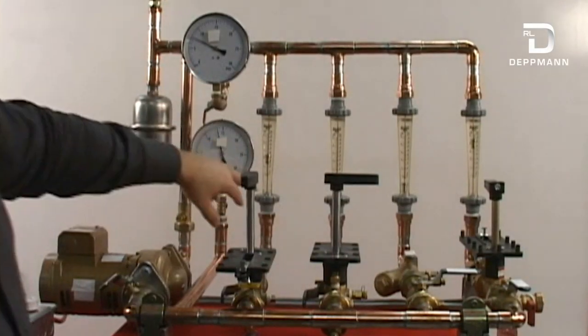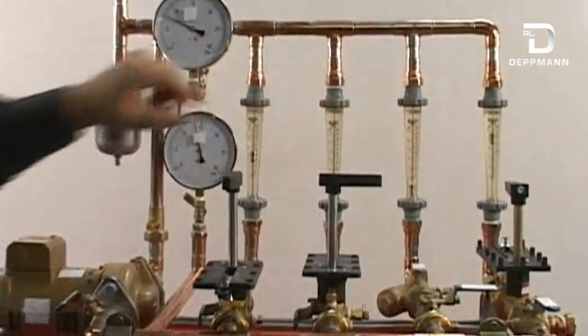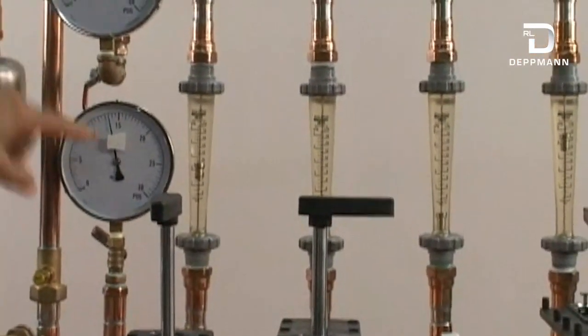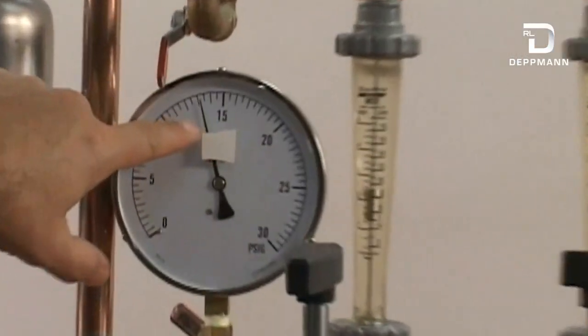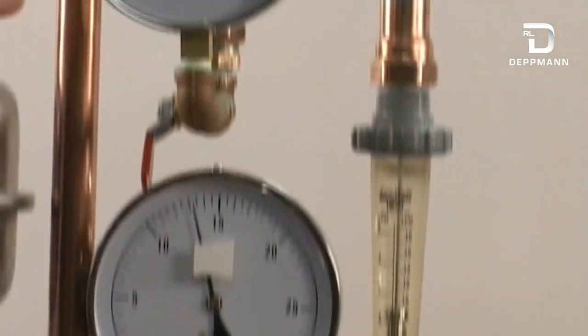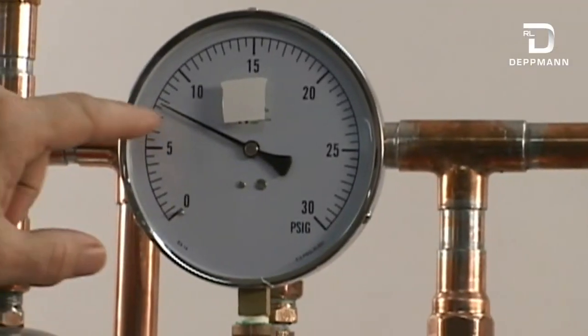Our system's up and running. We've got flow through this zone and this zone, and you see our differential pressure. Roughly we're at 14 pounds right here and roughly 8 pounds here.